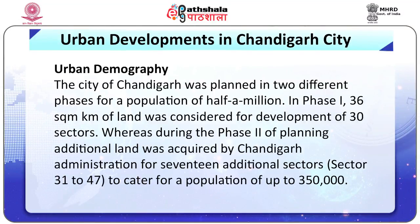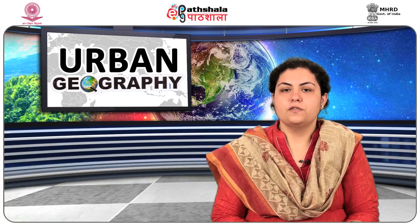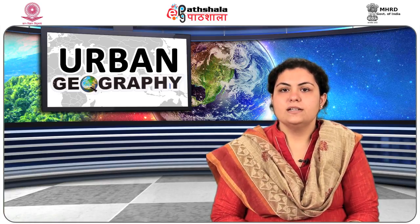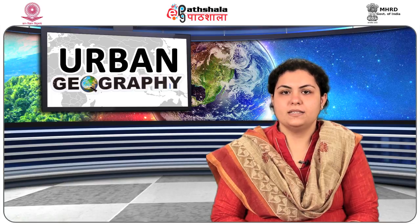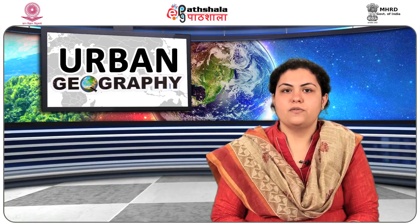The city of Chandigarh was planned in two different phases for a population of half a million. In Phase 1, 36 square kilometers of land was considered for the development of 30 sectors. During Phase 2, additional land was acquired by the Chandigarh Administration for 17 additional sectors to cater to a population of up to 3,50,000. The second phase was intended towards high density of population, leading to the predominance of three-to-four storey apartments. However, Chandigarh City has now grown beyond its planned capacity, and therefore Phase 3 planning and development is proposed in areas from sector 48 onwards.